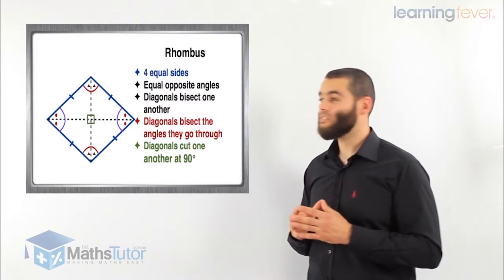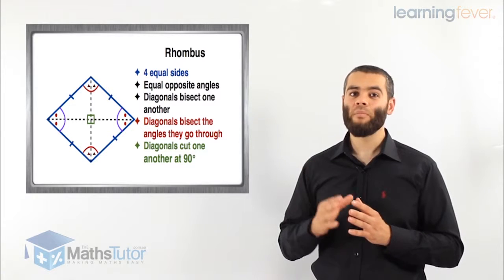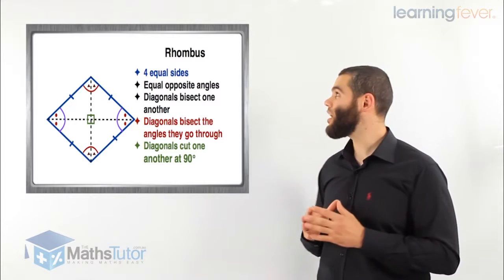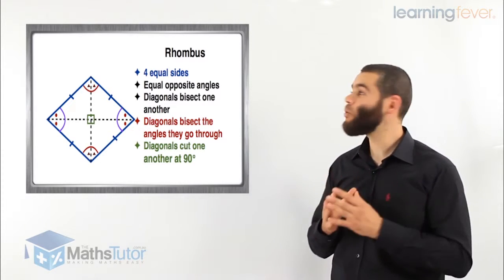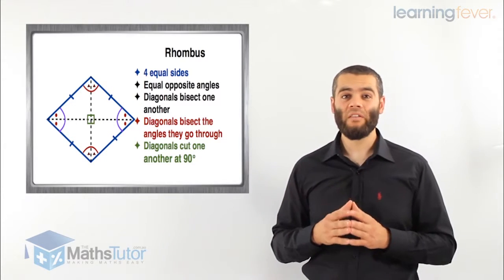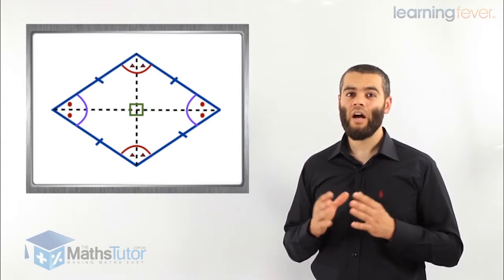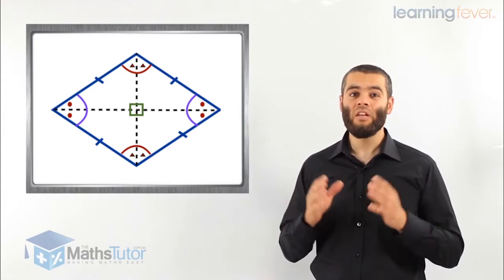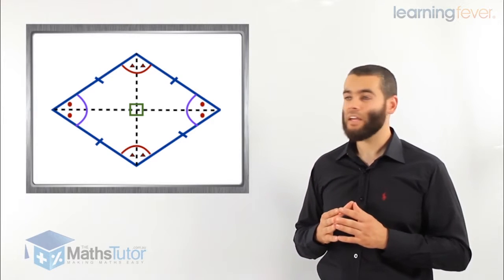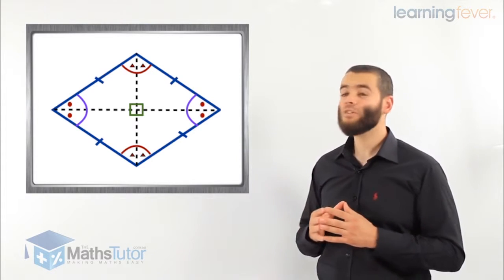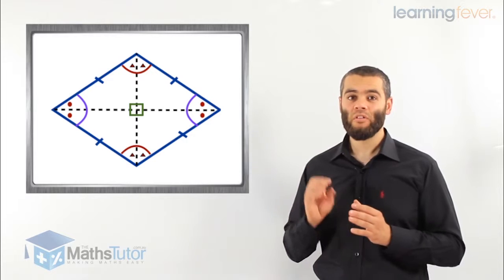Then we have the rhombus — known in primary school as a diamond, but its mathematical name is rhombus. The rhombus has four equal sides marked in blue, and equal opposite angles. The diagonals bisect one another, cutting each other in half, and the diagonals bisect the angles they go through — just like a square. The diagonals also cut one another at right angles, marked in green.